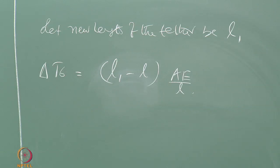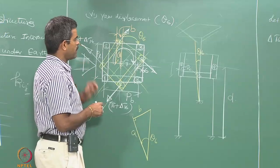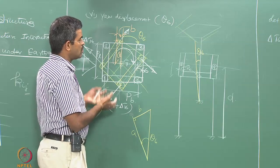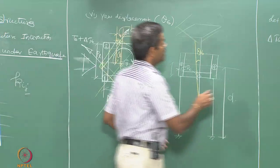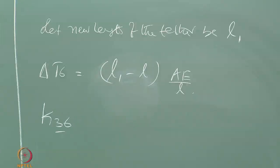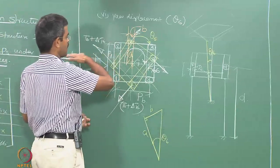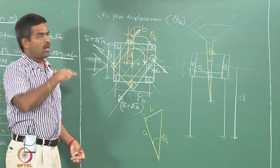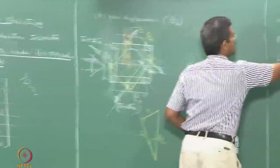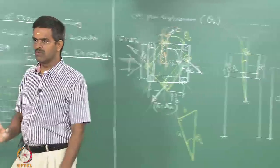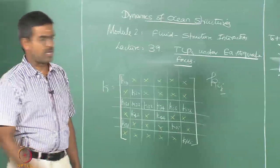Therefore, delta T6 equals (L1 minus L) multiplied by the axial stiffness — that is the new tether force caused by the yaw rotation. The moment yaw occurs in the horizontal plane, a set-down effect happens, invoking K36. Any change in length will try to pull down or release the platform in the heave direction, which we call set-down. So K36 is invoked.